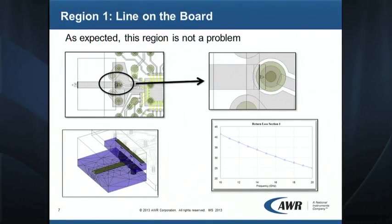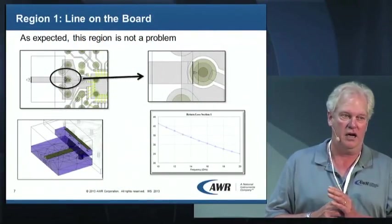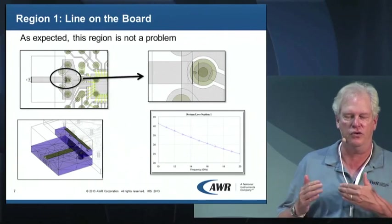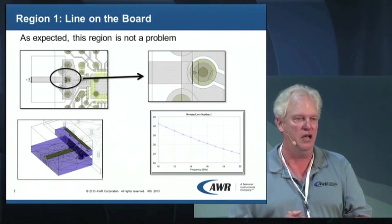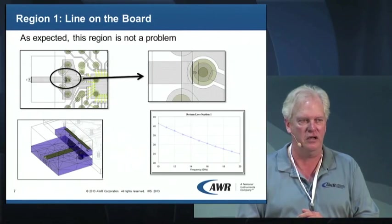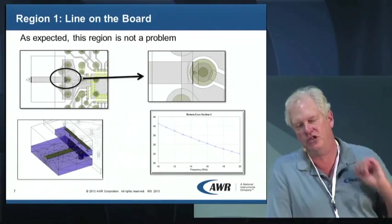A subtlety here: when you start adding ports, you have to ask where the ground return of the port is. Sometimes you want to do a plus-minus configuration — a one-plus and a one-minus — so you can specify the return. Because when you make that simulation boundary and change it, remember you're only simulating in that region. It doesn't know anything about the rest of the module. If you accidentally don't include your ground via in your simulation region, you have completely changed the grounding of the system.